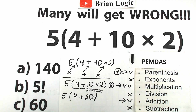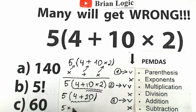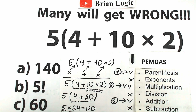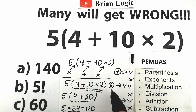Now the final step inside the parentheses: we have addition. Our third step is to add 4 plus 20, which obviously equals 24. Then 5 times 24 equals 120. The fourth step is the last multiplication outside the parentheses. One multiplication was step two, and the second multiplication is our fourth step.